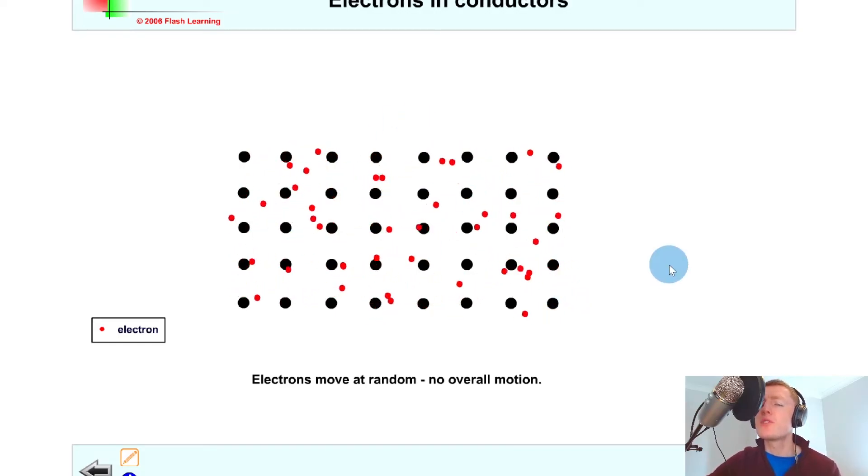So without a potential difference or voltage applied to the conductor, the electrons will move at random and there's no overall motion.